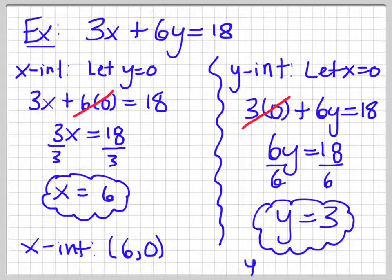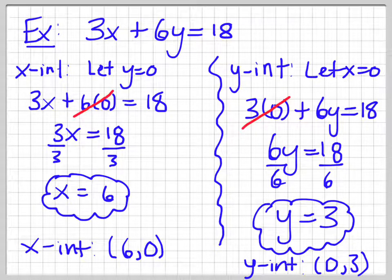So, that's my y intercept. So, that's the point (0, 3). x is equal to 0, y is 3. And then x intercept, x is equal to 6, y is 0.